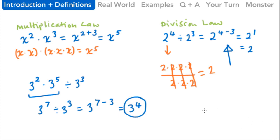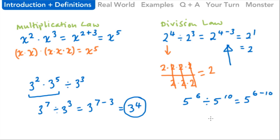One final example involves a negative exponent. If we had five to the sixth divided by five to the tenth power, we've got a common base, so we keep the base and do six minus ten — because that is the order we have to subtract. This gives us an answer of five to the negative four power. It's perfectly acceptable to have a negative exponent, so five to the negative four is perfectly fine.